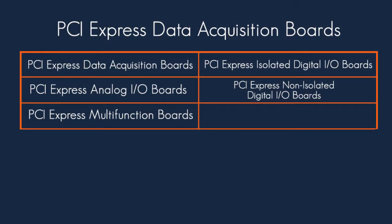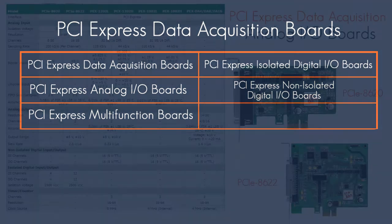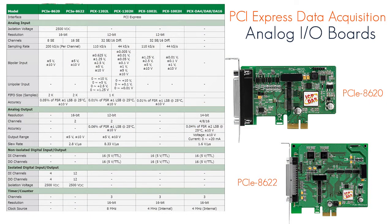Our PCI Express data acquisition boards include multifunction boards, analog I/O boards, and isolated and non-isolated digital I/O boards. Some of the features for the analog I/O boards are AI synchronous sample and hold, 16-bit 200K sampling rate for all channels, and the 2K sample AI FIFO.